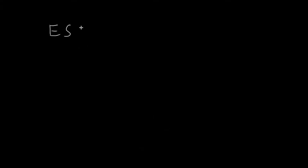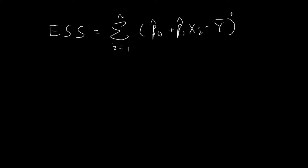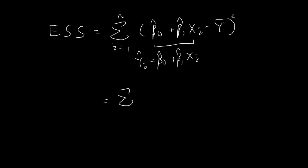In this video I'm going to introduce the term the Explained Sum of Squares. E stands for 'explained' and this term is defined as the sum from 1 to n of β̂₀ plus β̂₁ times xᵢ minus the sample mean of y, all squared. I can express β̂₀ + β̂₁xᵢ as ŷᵢ, so the Explained Sum of Squares can be written as the sum of (ŷᵢ minus the sample mean of y), squared.